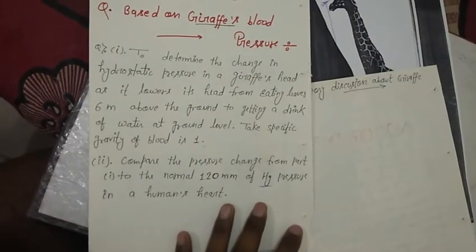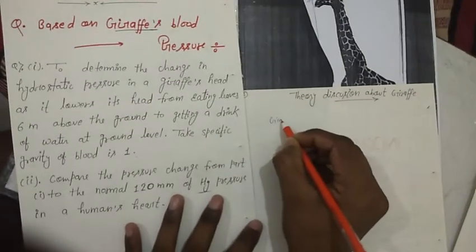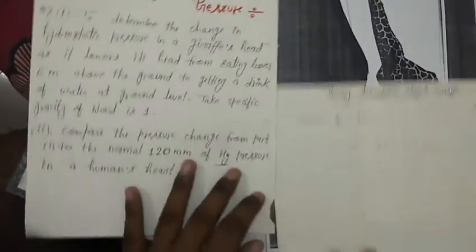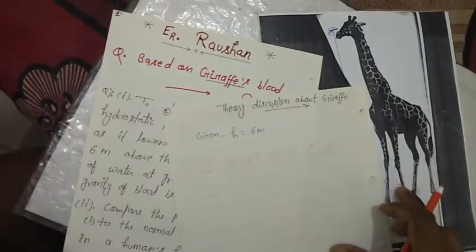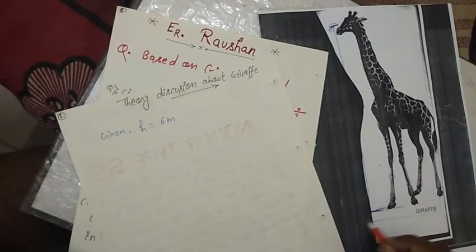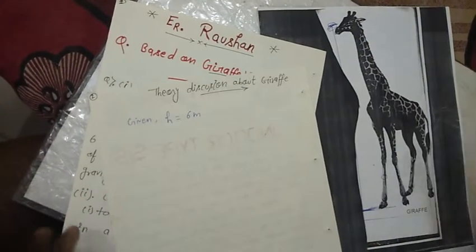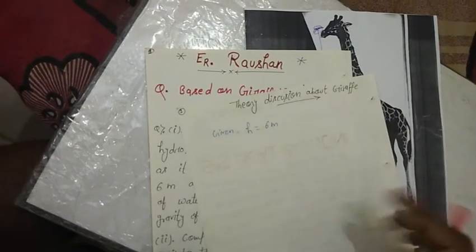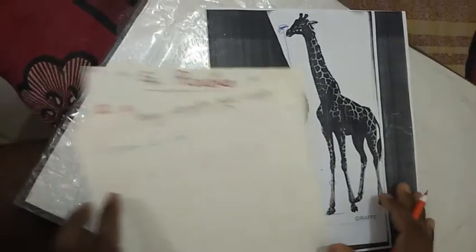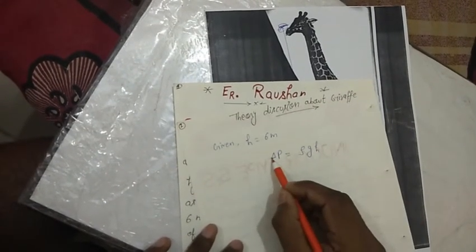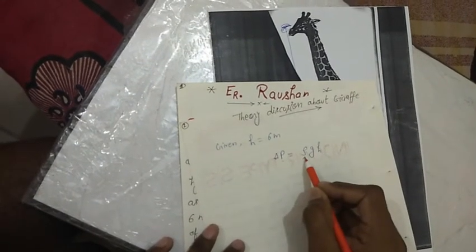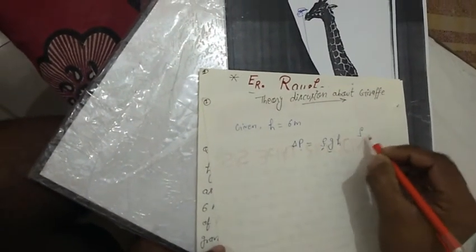Given values: h = 6 meters, from ground level to the giraffe's head when eating tree leaves. When it lowers its head to drink groundwater, the pressure rises — this is known as hydrostatic pressure. The formula is: ΔP = ρgh, where ΔP is the change in pressure, ρ is density, g is gravity, and h is height or elevation. The density of giraffe blood is 1000 kg/m³.